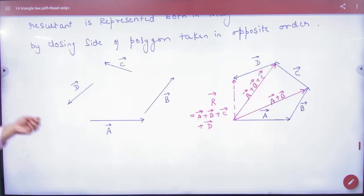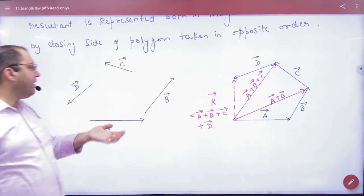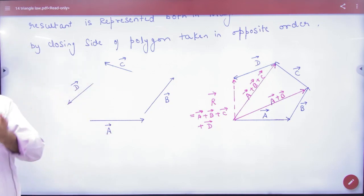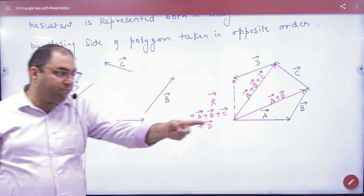So Polygon Law says that if you have many vectors that you want to add - A vector, B vector, C vector, D vector, E vector - so you can make a polygon side taken in same order, important.